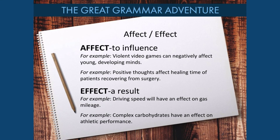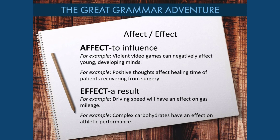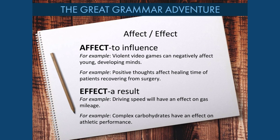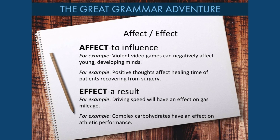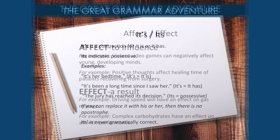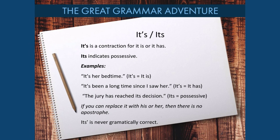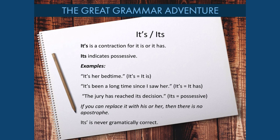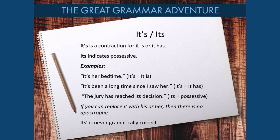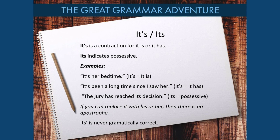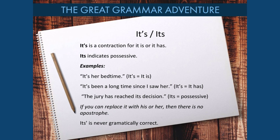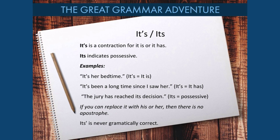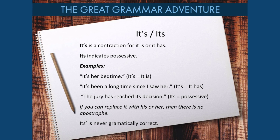Affect and effect: affect with an A refers to influence, and effect with an E refers to a result. Regarding it's and its: I-T-apostrophe-S is a contraction for it is or it has. Keep in mind that in academic writing, contractions are not recommended — not just it's, but any contractions anywhere in your academic writing.